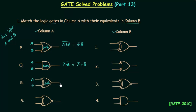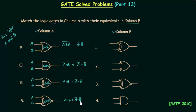The third gate is an XOR gate with inputs A and B. The output is A·B complement OR A complement·B. The last gate in column A is an XNOR gate with inputs A and B. Its output is A·B OR A complement·B complement.